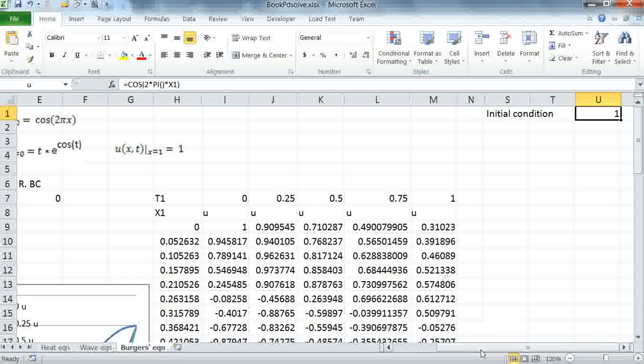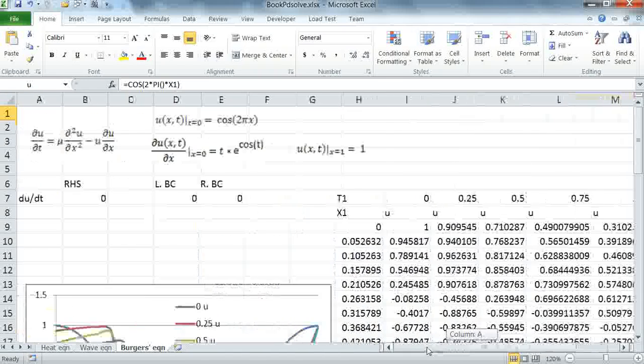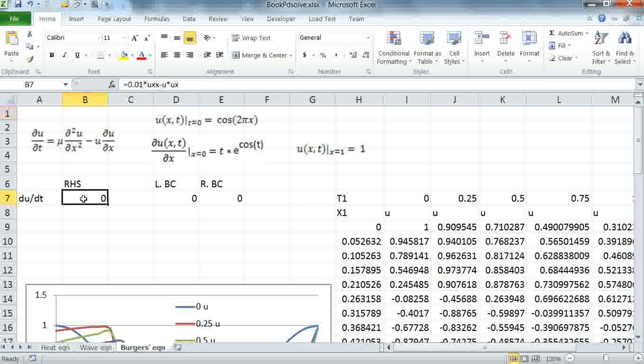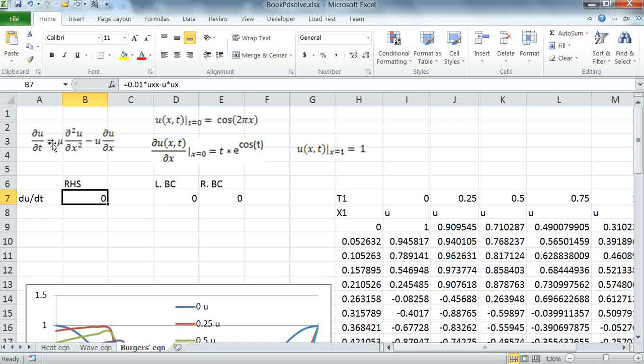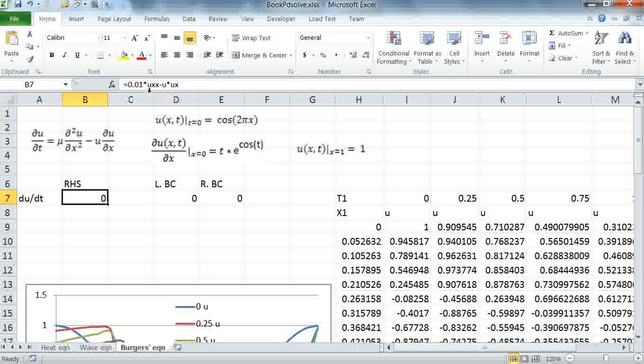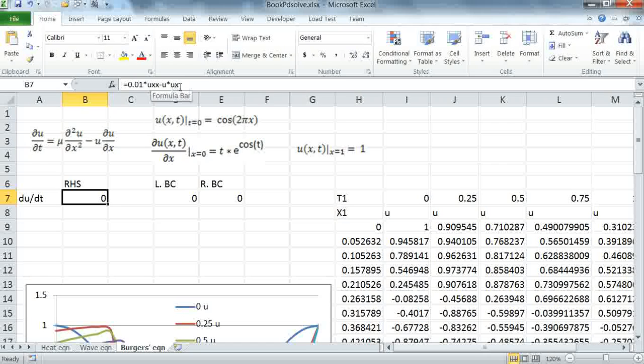Where x1 and t1 are my free variables for the system. Having defined these variables, I can easily now write my right hand side formula for the equation, which corresponds to the given equation here. It's u times uxx minus u times ux.